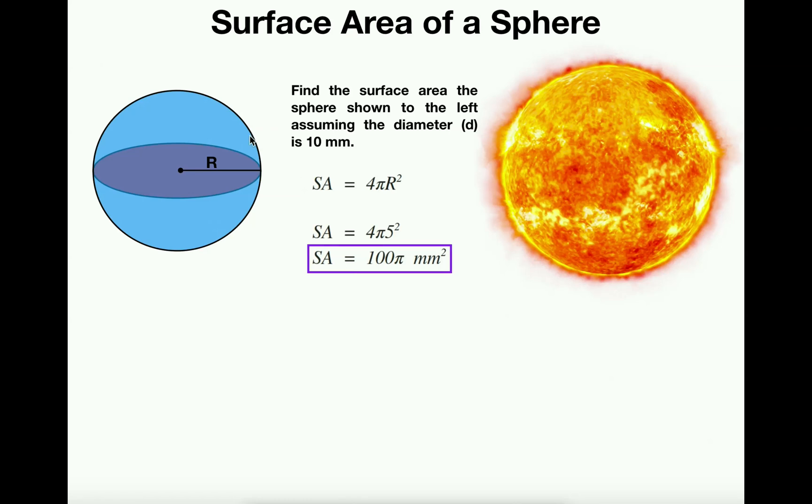And remember, the surface area of the sphere is really just this entire coating of the outside of the sphere. In other words, if you were to take a basketball and throw it in a tub of paint and then pull it out and wait for it to dry, only the surface area of the basketball would be coated in paint. That's what we're talking about when we mean surface area.